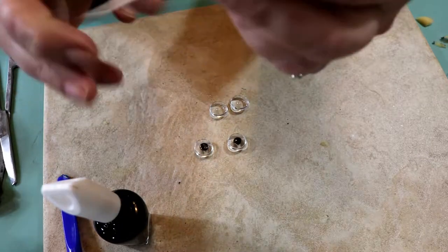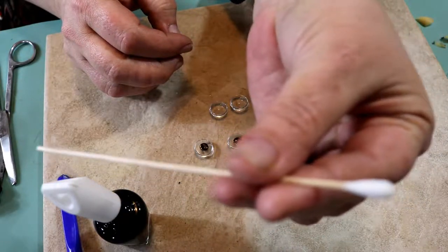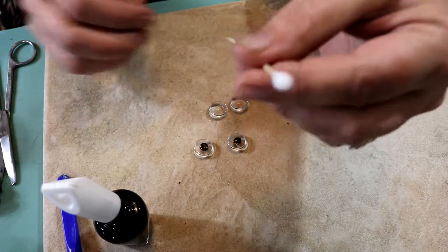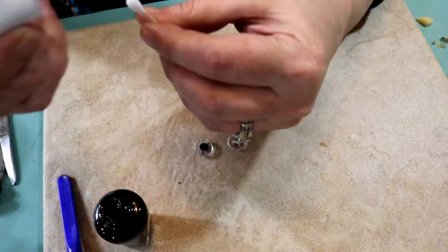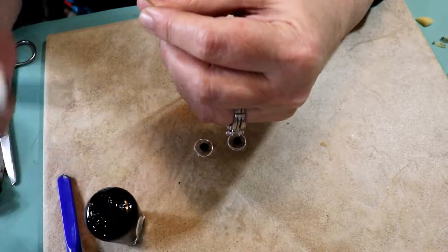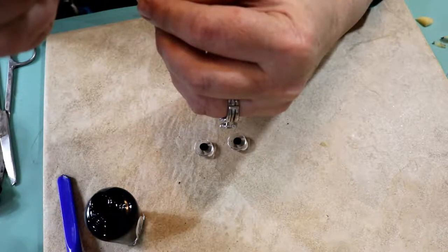You just get a Q-tip, and you can order these on Amazon, about a thousand of them for, I don't know, 10, 15 bucks. And coat the end of it with your black polish.